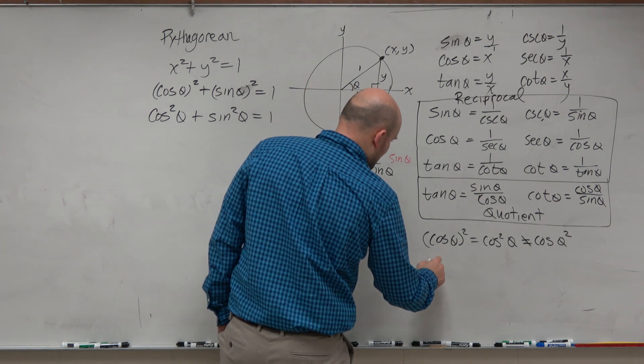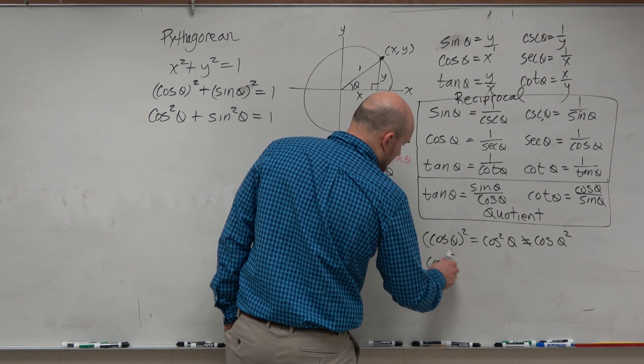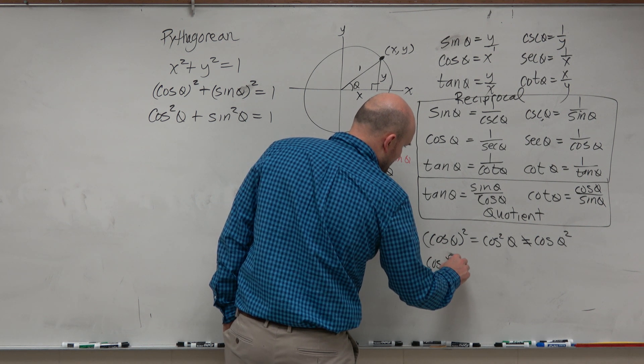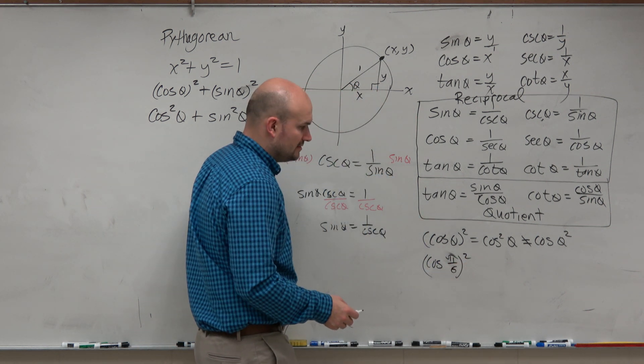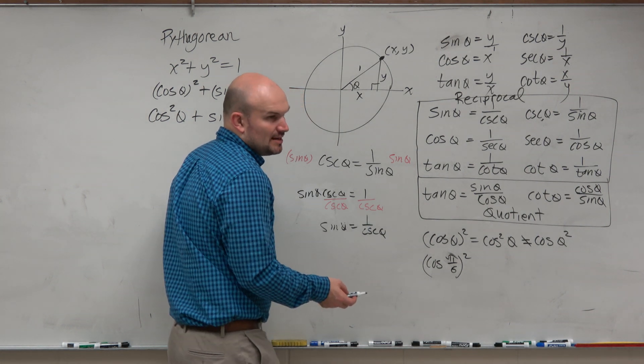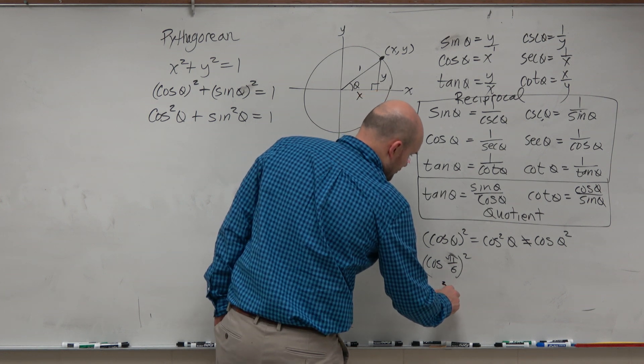So for instance, if I said, what is the cosine of pi over 6, that's squared, right? Cosine of pi over 6 is square root of 3 over 2. That squared is going to be 3 over 4.